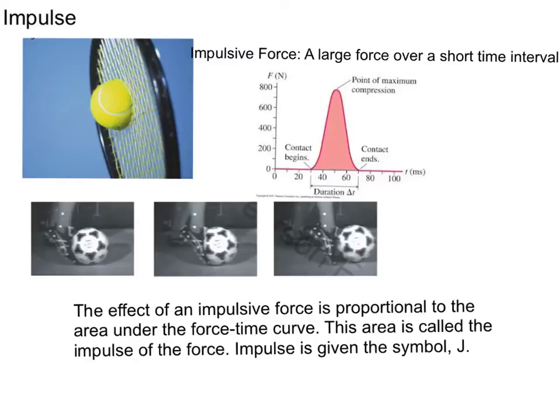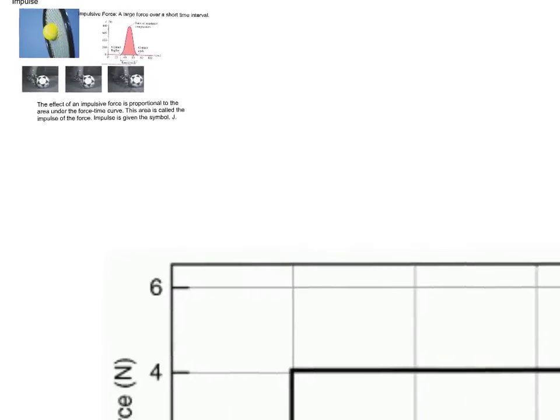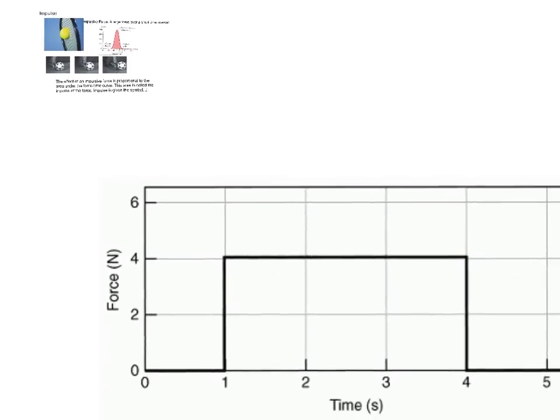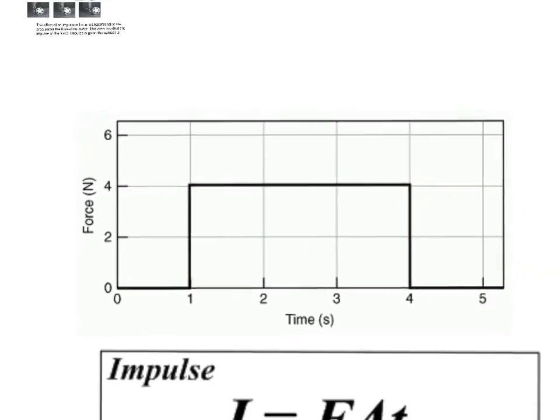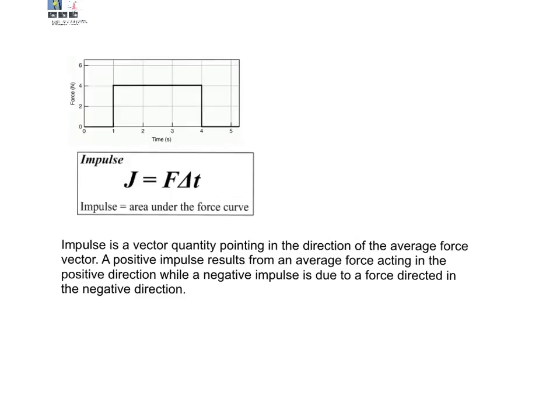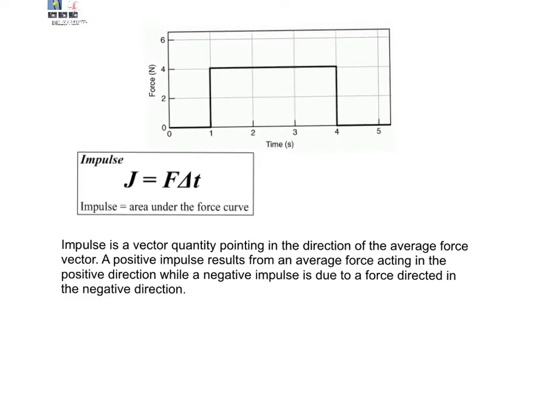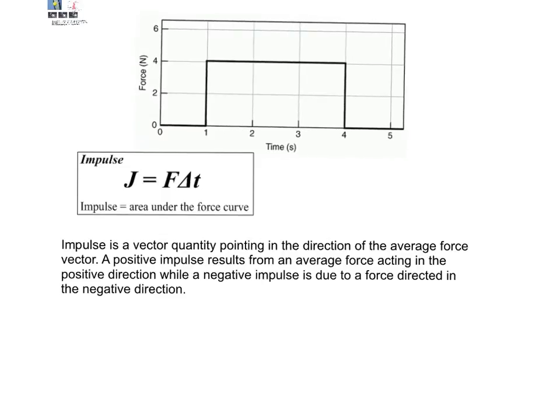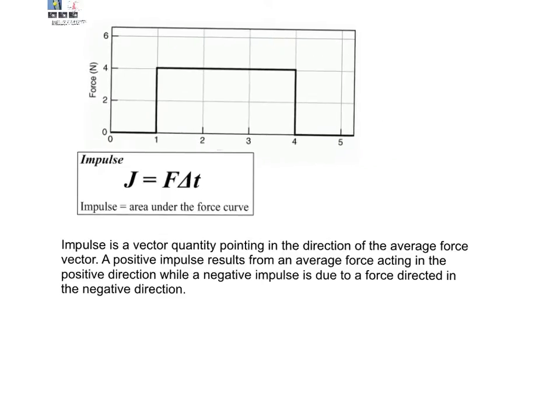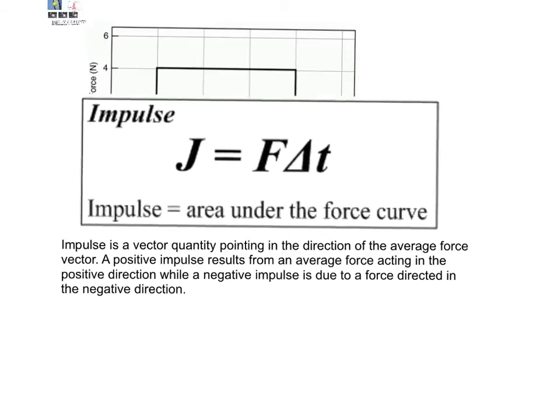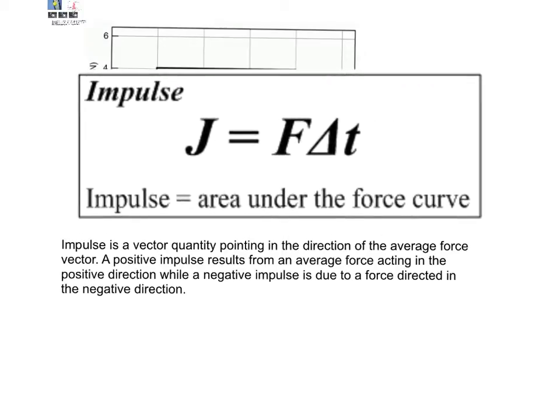Now, impulsive forces can be sort of complex, with the shape of the force-time graph being complex as well. However, any graphs that we see will be simplified to be similar to this one here. From this graph, we can see that the area under the force-time curve can be simply written as the average force times the time interval. And that's where we get our impulse equation.